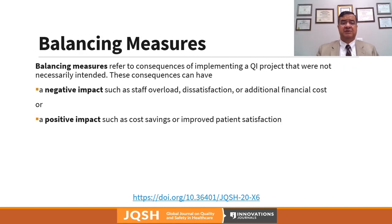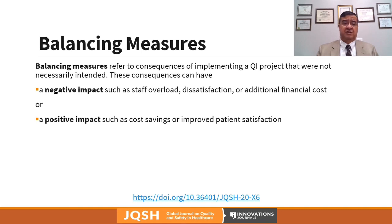Balancing measures refer to consequences of implementing a QI project that were not necessarily intended. These consequences could be negative, such as staff overload, staff dissatisfaction, staff attrition, or additional financial cost to the organization. Or they could be positive, such as cost savings, improved patient satisfaction, or staff satisfaction.